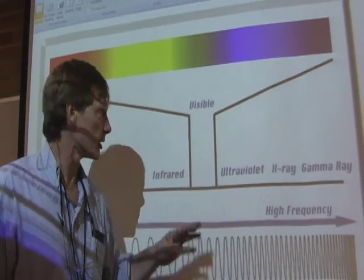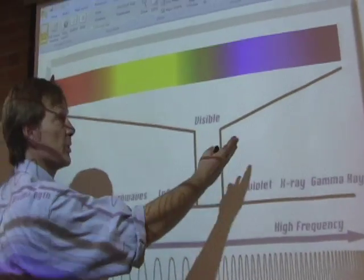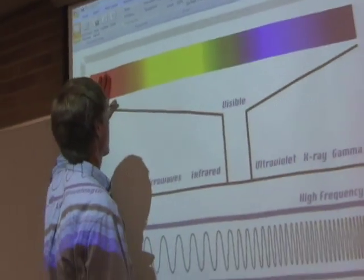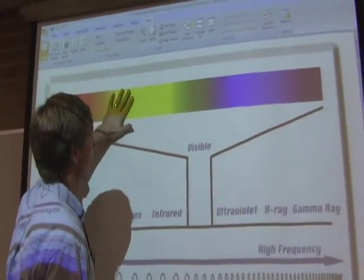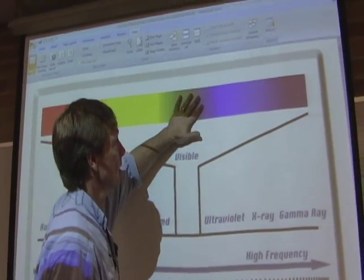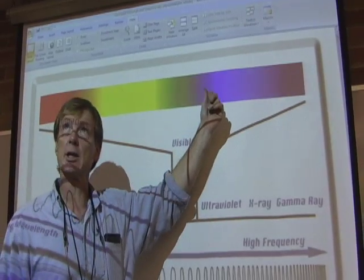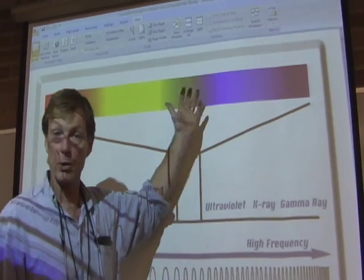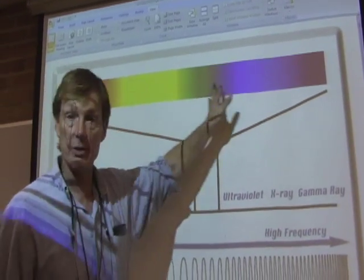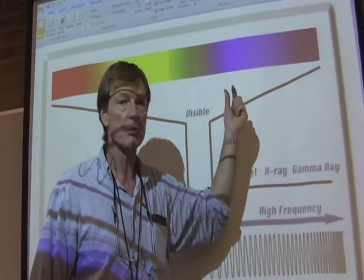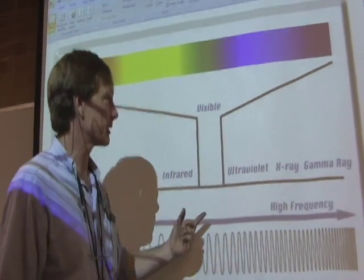They're just designed to it. And what we perceive them in our brain is we perceive this is red. And shorter wavelength is yellow, shorter wavelength green, blue, violet. Or red, orange, yellow, green, blue, indigo, violet. Roy G. Biv. It's the standard spectrum. But it's just a small fraction of the total electromagnetic spectrum.